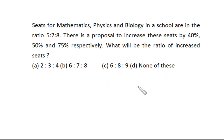Now let's see this question. Seats for Mathematics, Physics, and Biology in a school are in the ratio 5:7:8. There is a proposal to increase these seats by 40%, 50%, and 75% respectively. What will be the ratio of increased seats?